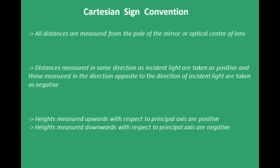There is a convention to measure distances in ray optics called the Cartesian sign convention. I strongly suggest you stick to one convention, otherwise it leads to a lot of confusion. Our convention says that all distances are measured from the pole of the mirror or the optical center of the lens.